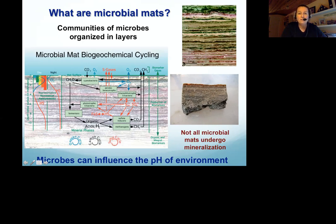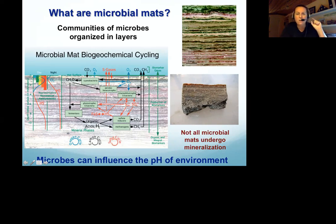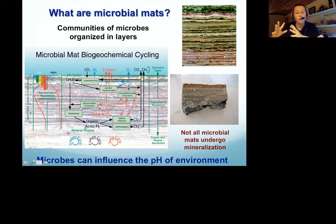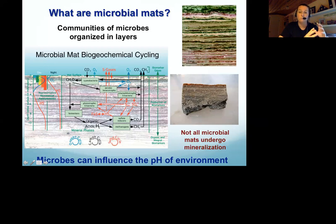Microbial mats are essentially organized communities of microbes that form very distinct layers. They have complex cycling of nutrients — cycling carbon, oxygen, and sulfur through a whole host of different metabolisms, all happening within a very small region of centimeters. These metabolisms can influence the pH of their environment, shifting things either more acidic or more alkaline. It takes a shift towards higher pH or a more alkaline environment to facilitate actual stromatolite formation. They don't form well under acidic conditions.